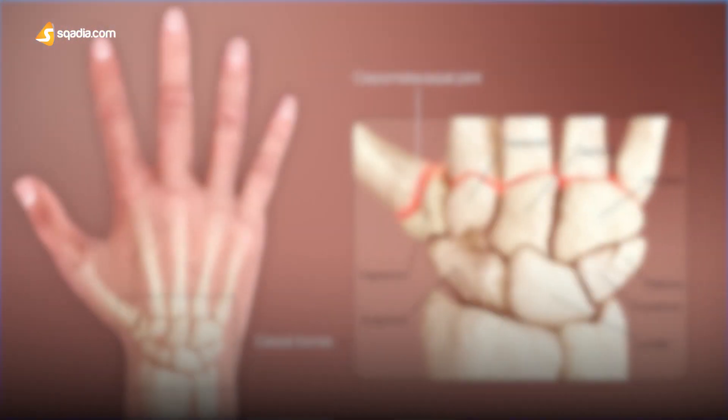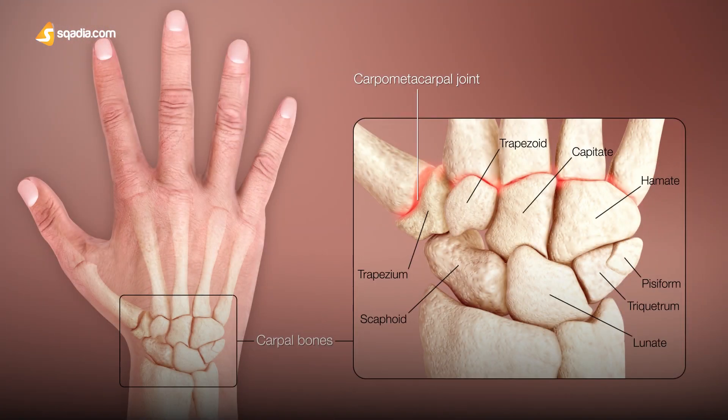The most firmly fixed metacarpal in the hand is the index metacarpal. The thumb metacarpal articulates with the trapezium. The middle metacarpal articulates with the carpal bones by innate interlocking bone elements at the bases. The ring metacarpal is somewhat more mobile, whereas the fifth metacarpal is semi-independent.